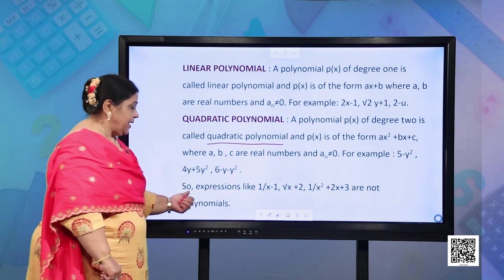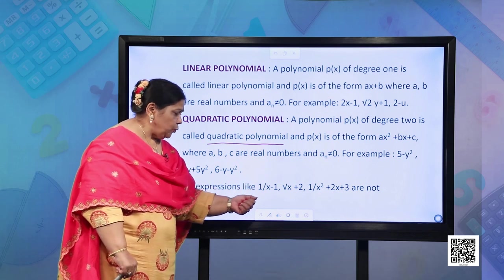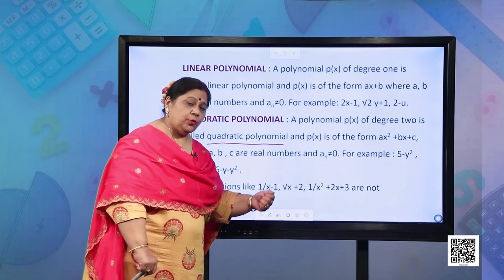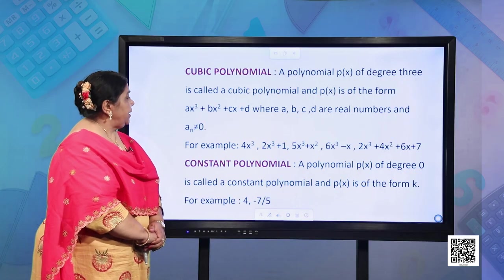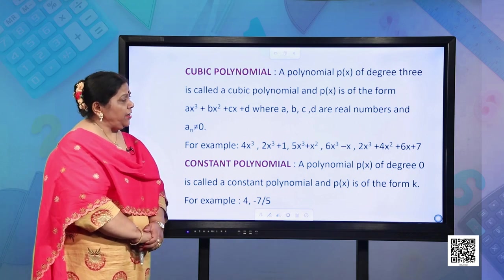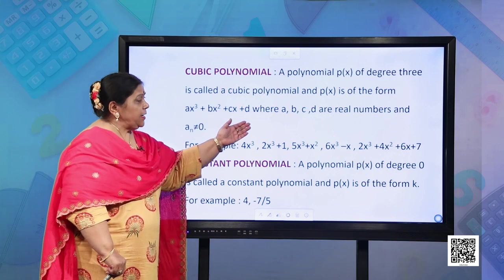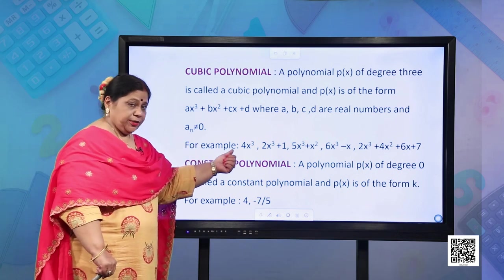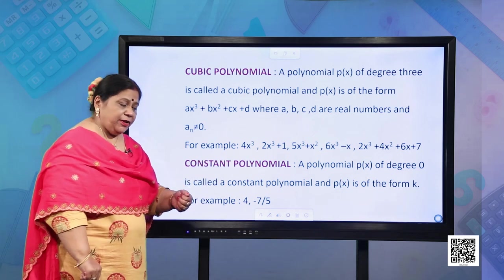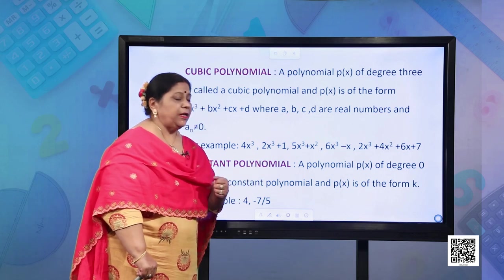For example, 5 − y², 4y + 5y², 6 − y − y². We understand that expressions like 1/(x−1), √(x+2), and 1/(x²+2x+3) are not polynomials. Now let us see what is a cubic polynomial. A polynomial p(x) of degree 3 is known as a cubic polynomial, and p(x) is of the form ax³ + bx² + cx + d where a, b, c, and d are real numbers and a is not equal to 0. For example, 4x³, 2x³+1, 5x³+x², 6x³−x, 2x³+4x²+6x+7.